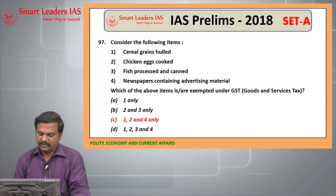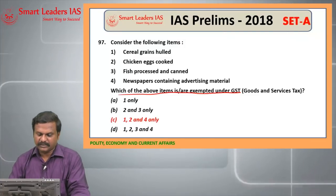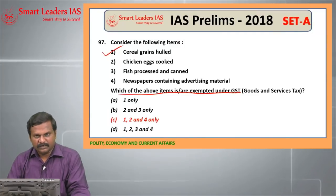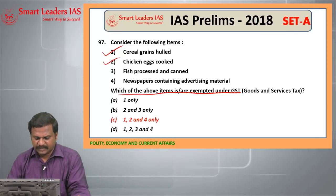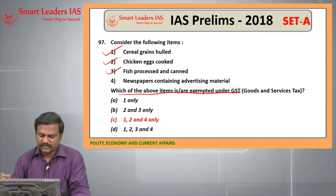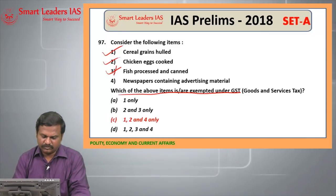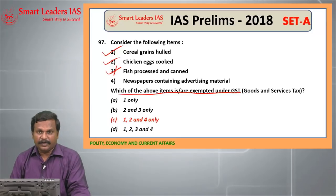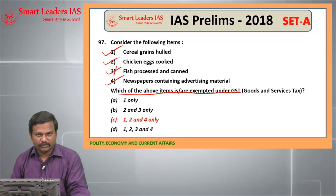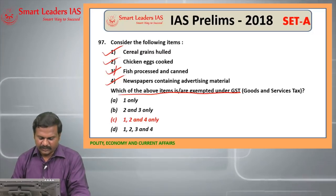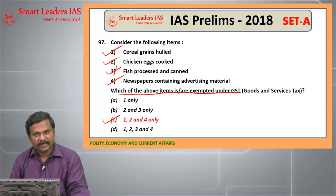97th question: which among the above items were exempted under GST? Cereal grains are exempted. Chicken eggs, whether raw or cooked, are exempted. Processed fish or canned fish is not exempted, so 3 should not come. Newspapers containing advertising material are exempted. Without option 3, the answer is C — 1, 2 and 4 only.